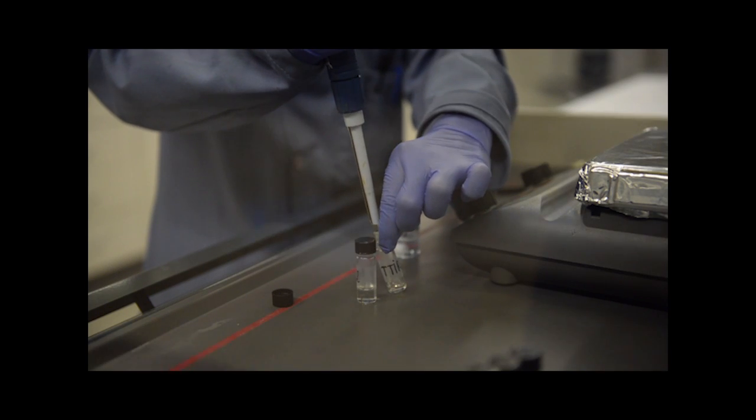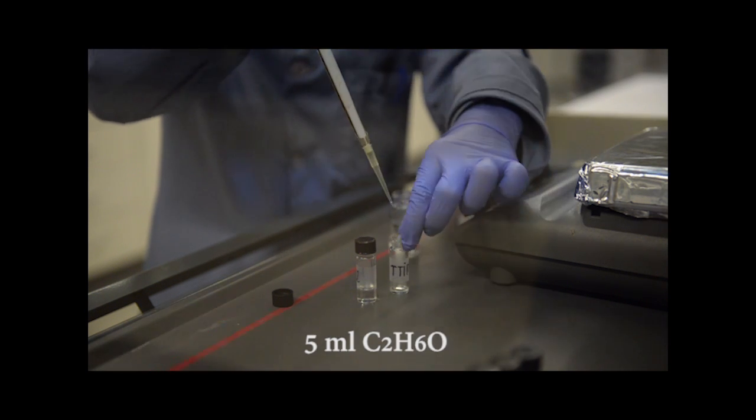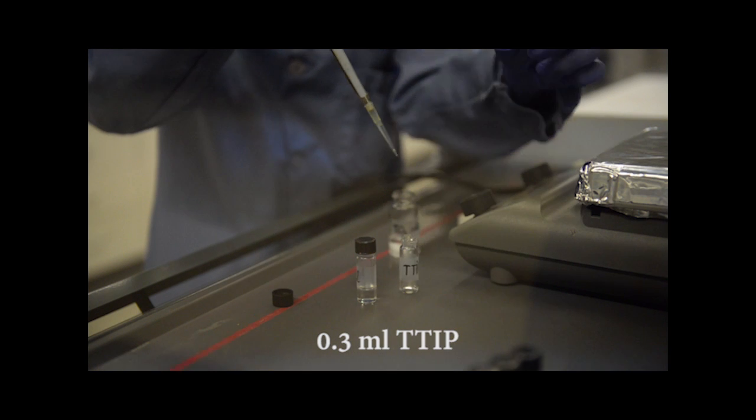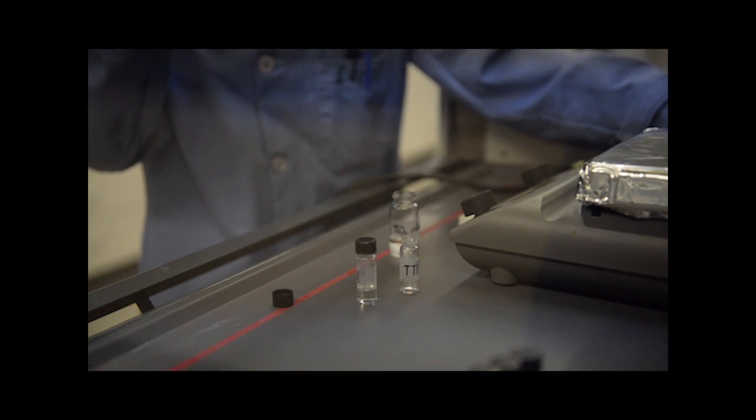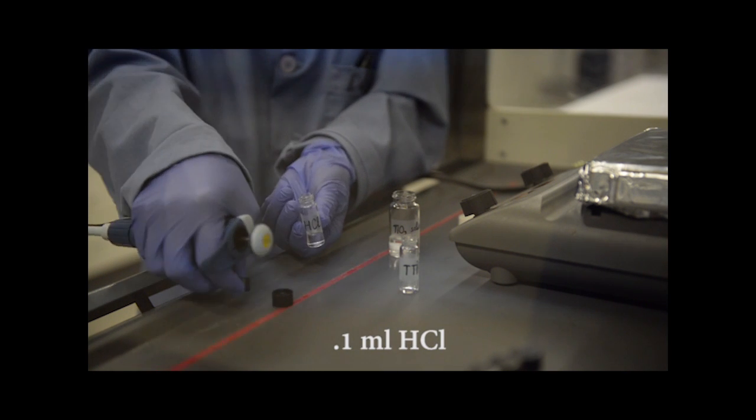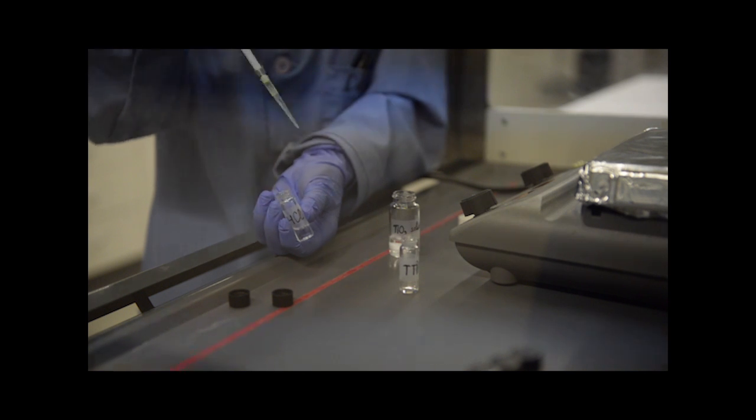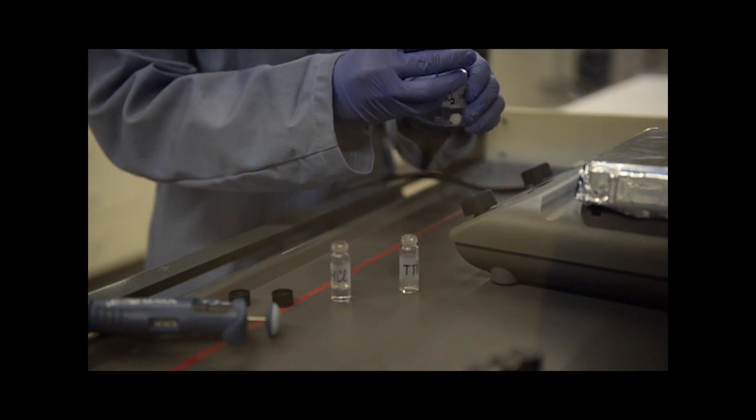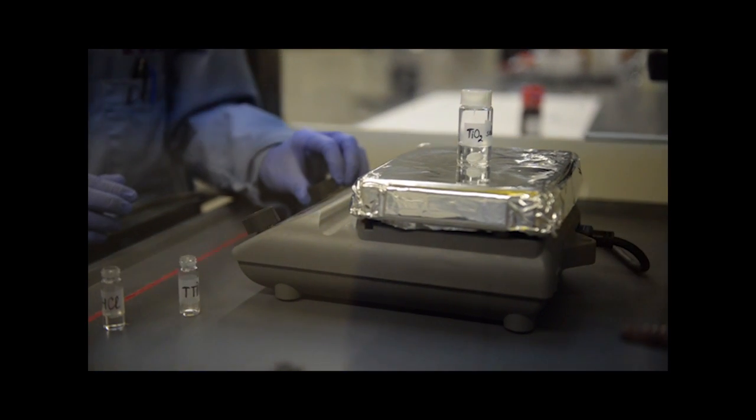To prepare the titanium solution, we use 5 milliliters of ethanol, we add 3 milliliters of titanium isopropoxide, and 0.1 milliliters of hydrochloric acid. After adding the three together, we let the solution stir at room temperature for about 10 minutes.